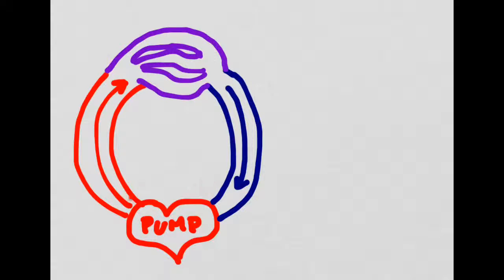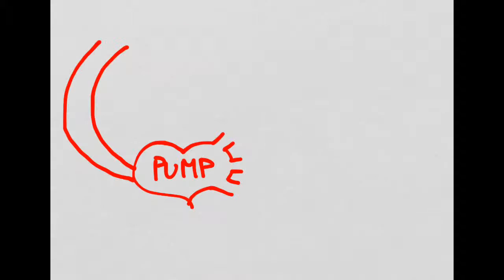Down here we have the pump, which in this case happens to be a heart. And then up here, this purple tissue is going to be where the oxygen diffuses out of the blood into the tissues, and then carbon dioxide diffuses back in, in order to be released back into the lungs.